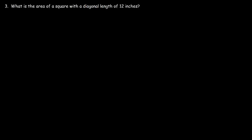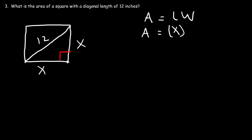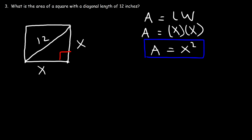Now let's work on some word problems. What is the area of a square with a diagonal length of 12 inches? So first let's draw a square — this is just a rough sketch. This is the diagonal of the square, so that's 12. Now let's call the side length x. All four sides of a square are the same, so this is x. Notice that we have a right triangle. The area of a square is the length times the width, and both are equal to x, so the area is x squared. If we can calculate the value of x, we can calculate the area. So let's use the Pythagorean theorem: c squared is equal to a squared plus b squared.